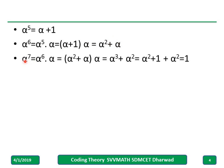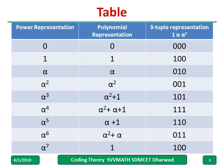Similarly, alpha raised to 7: I multiply alpha raised to 6 by alpha and simplifying, I get 1, because alpha squared plus alpha squared equals 0. This is the consolidated table showing the power representation, polynomial representation, and 3-bit representation.